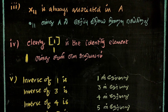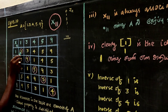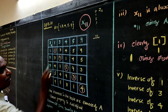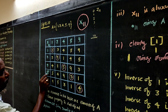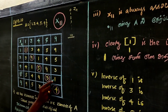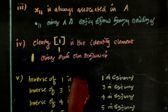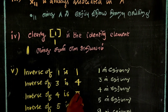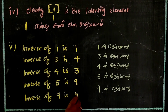From the inverse table: the inverse of 1 is 1, the inverse of 3 is 4, the inverse of 4 is 3, the inverse of 5 is 9, and the inverse of 9 is 5. Every element in A has an inverse within A.